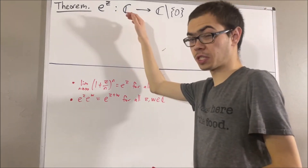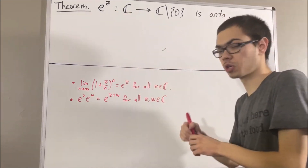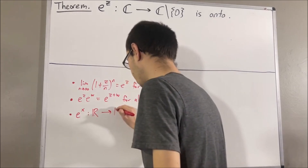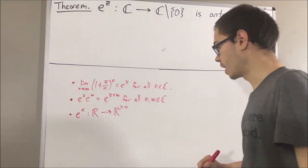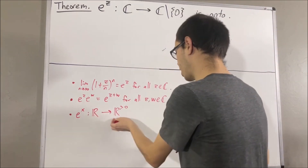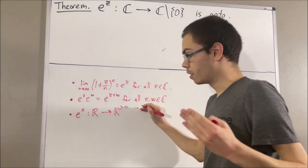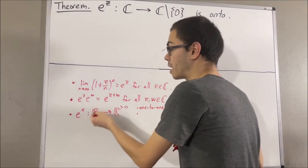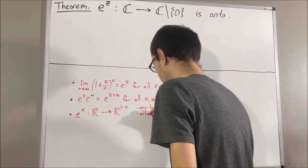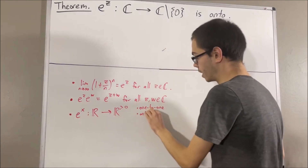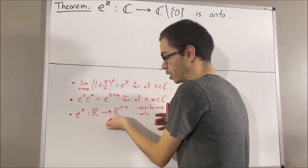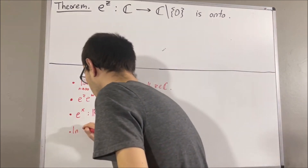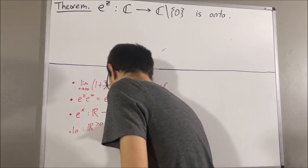Another thing we did with the exponential function was restrict it to the domain of real numbers. We found that the real exponential function is a function from the real numbers to the positive real numbers, and that it is strictly increasing, and therefore one-to-one. We also found that the real exponential function maps onto the positive real numbers, so it is both one-to-one and onto, meaning it has an inverse — the natural logarithm — which is a function from the positive real numbers to the real numbers.